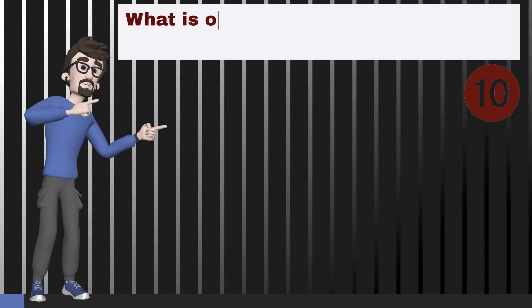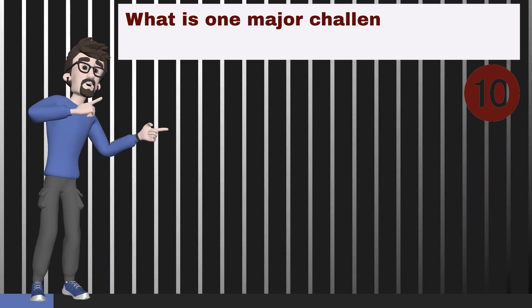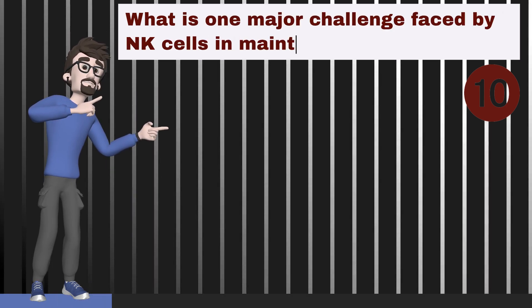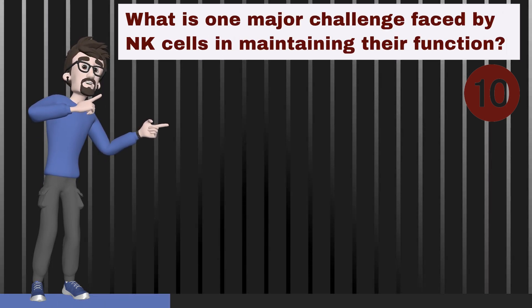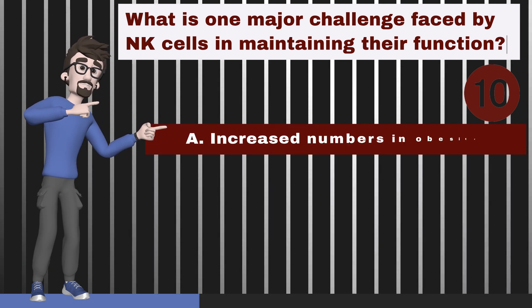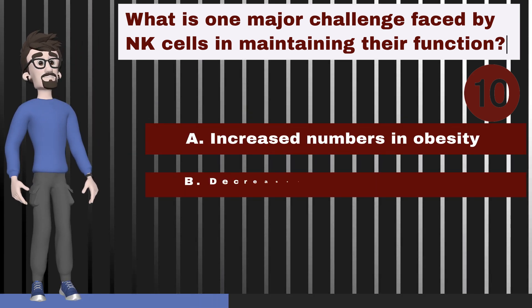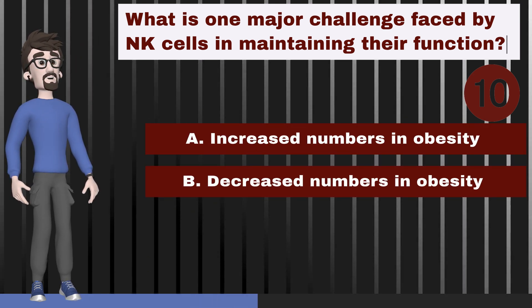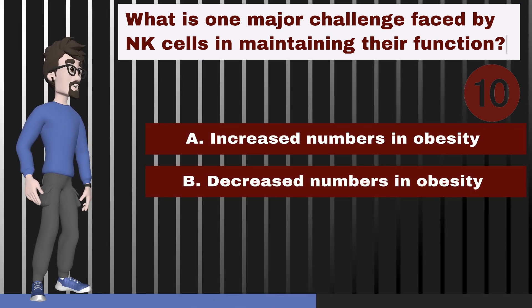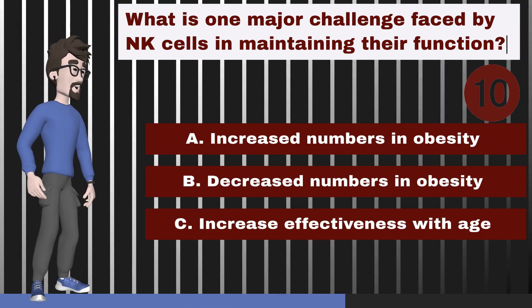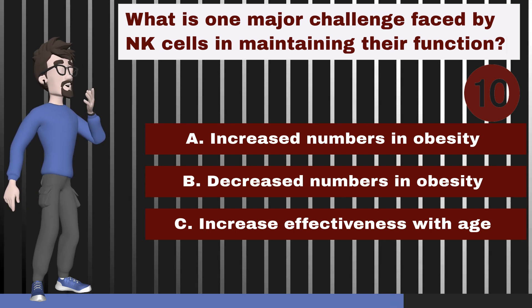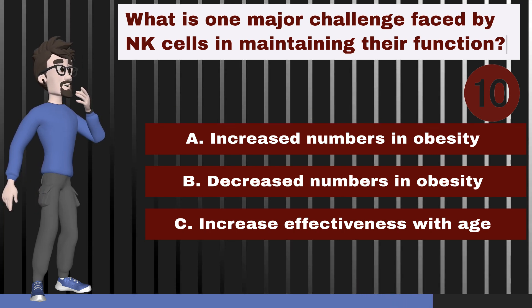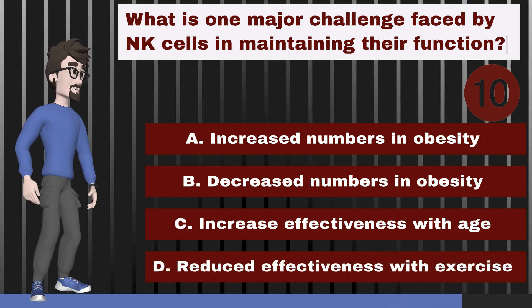What is one major challenge faced by NK cells in maintaining their function? A. Increased numbers in obesity. B. Decreased numbers in obesity. C. Increased effectiveness with age. D. Reduced effectiveness with exercise.